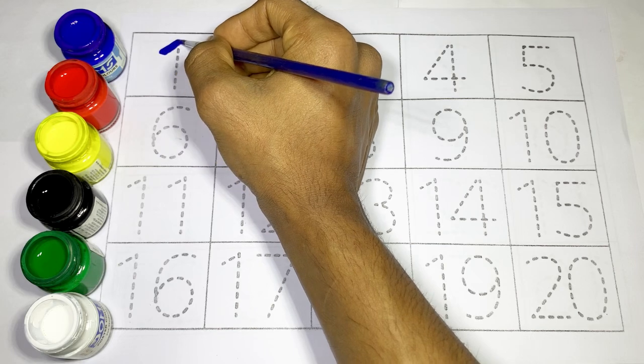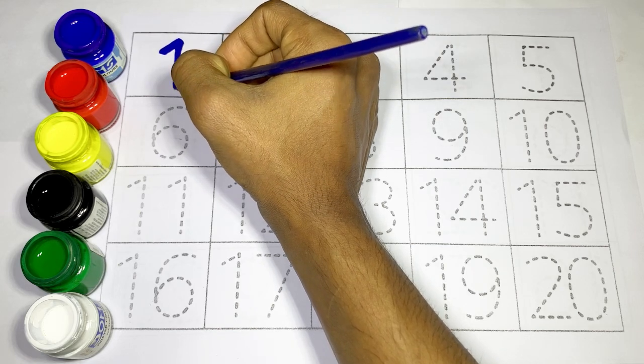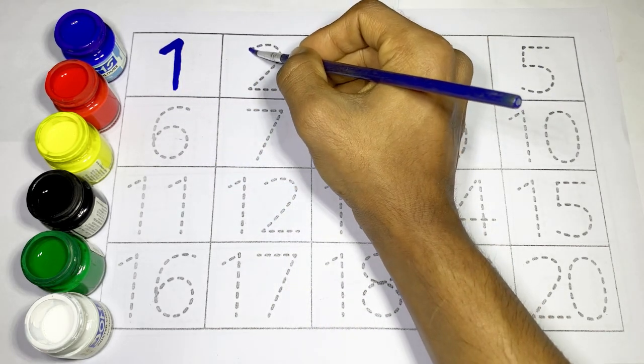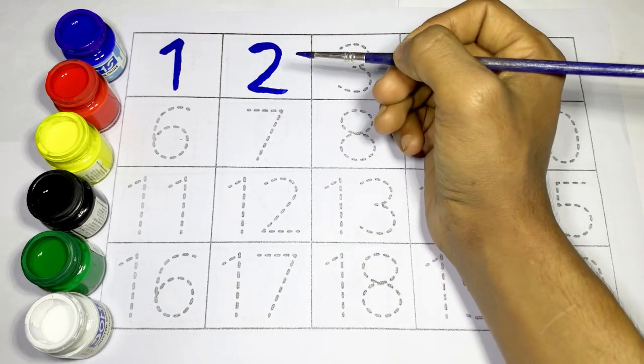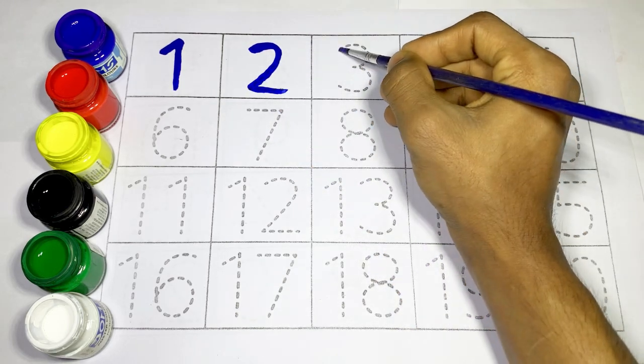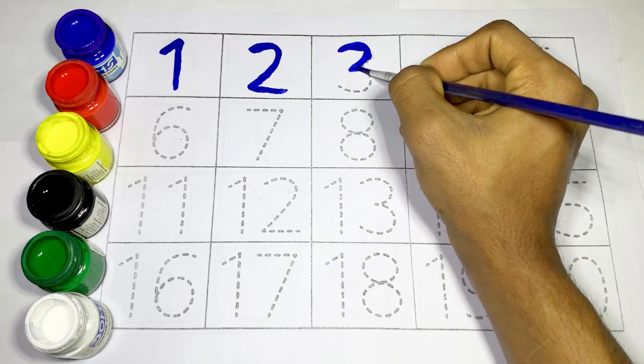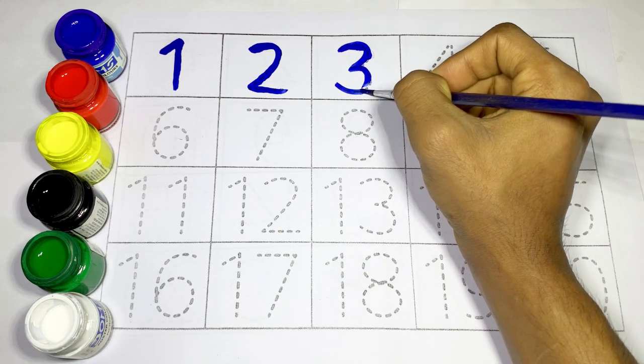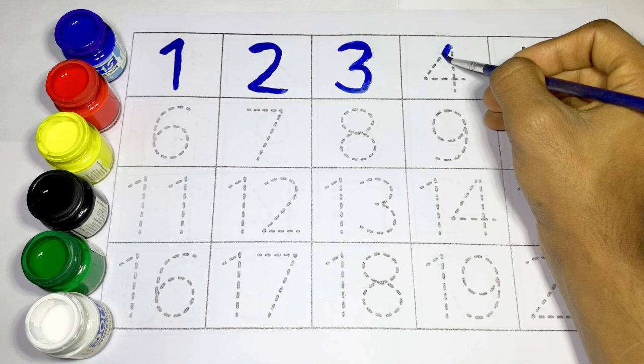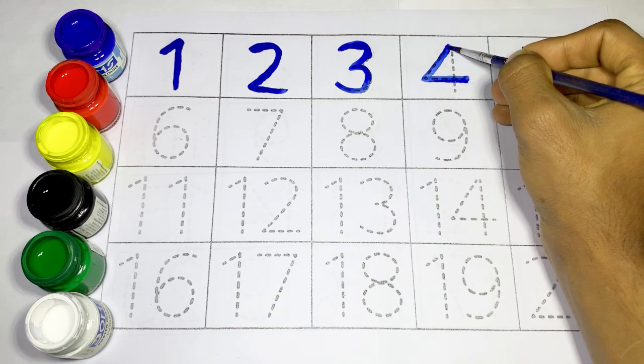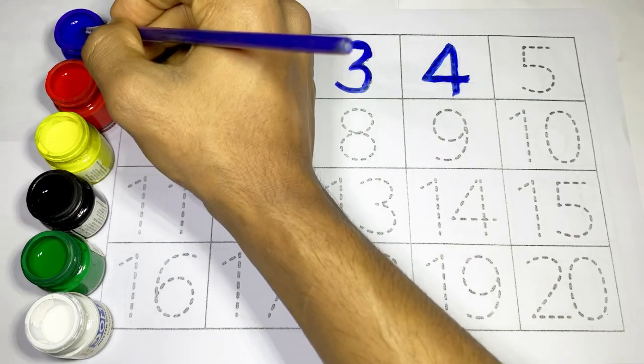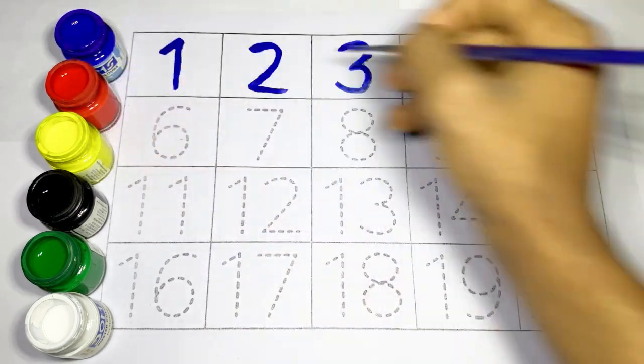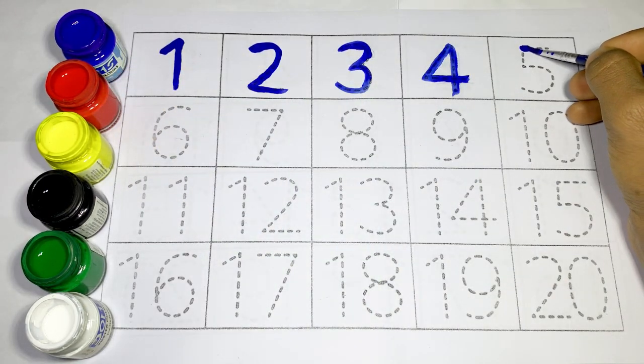O-N-E, 1. Number 2: T-W-O, 2. Number 3: T-H-R-E-E, 3. Number 4: F-O-U-R, 4. Use blue color and draw 5.